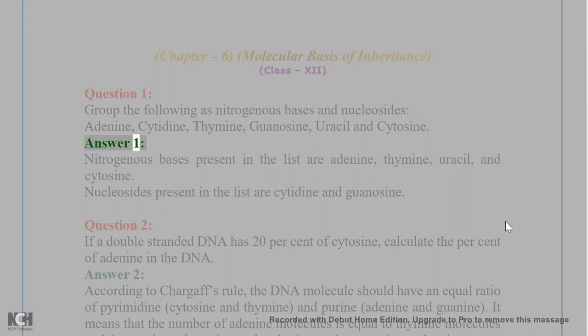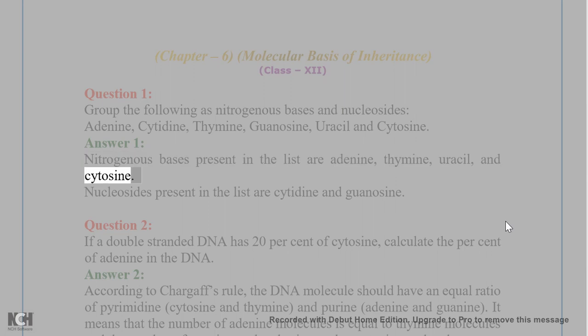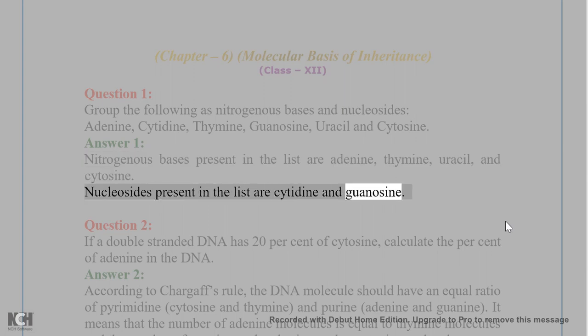Answer 1. Nitrogenous bases present in the list are adenine, thymine, uracil, and cytosine. Nucleosides present in the list are cytidine and guanosine.